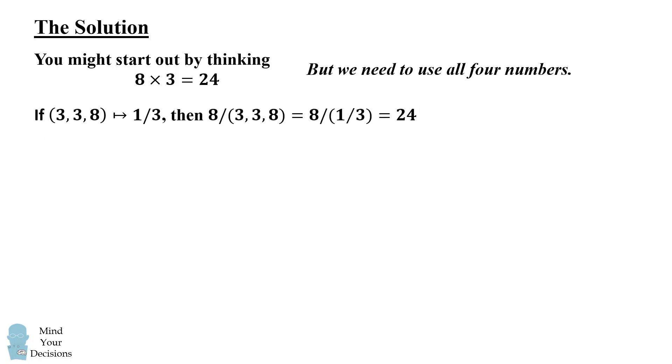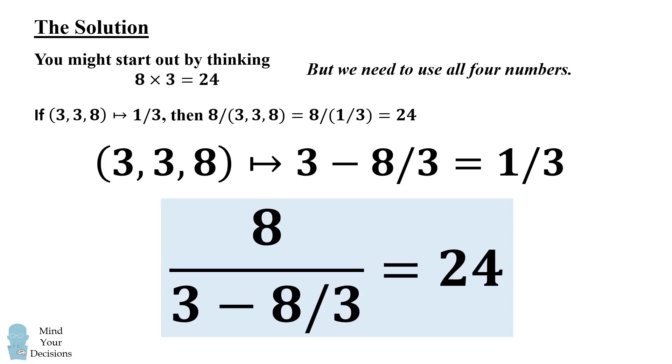So the trick is in this very last line. We are looking for 3 numbers—3, 3, and 8—to combine to be 1/3. And the way we do that is we do 3 minus 8/3. This equals 1/3. We could then take 8 divided by that to get to 24. And that's the answer.